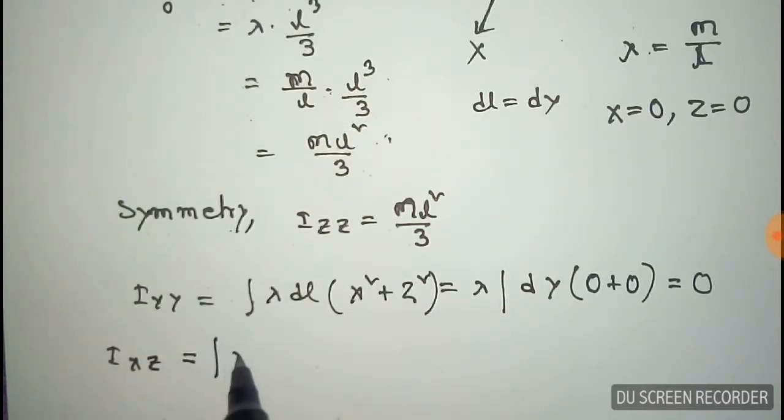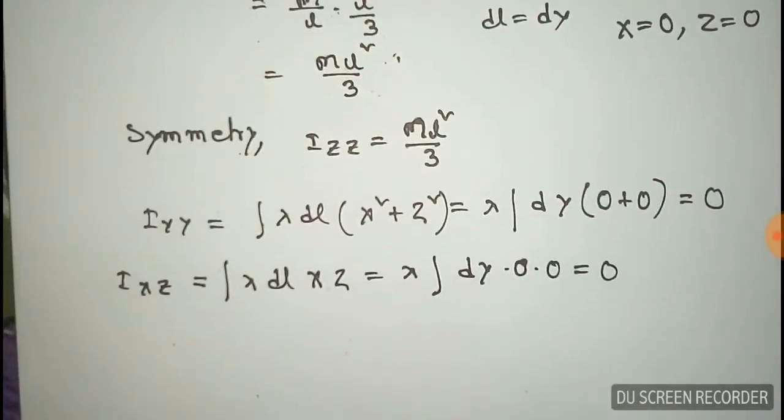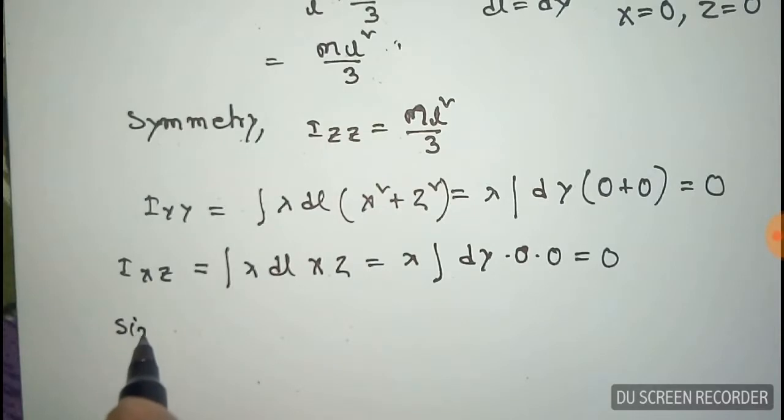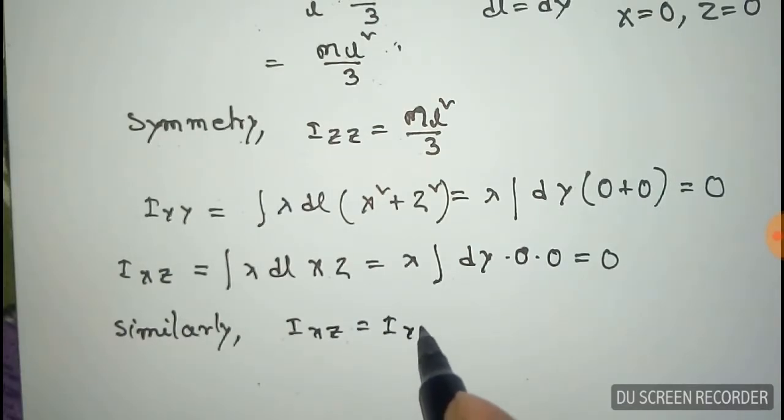Now the product of inertia, that is I_xz, lambda DY and x and z both are 0 so this is 0. And similarly the other products of inertia would be I_yz and I_xy also equal to 0.